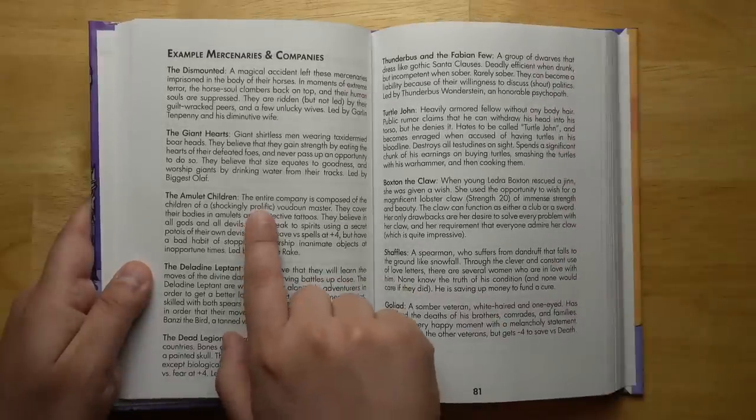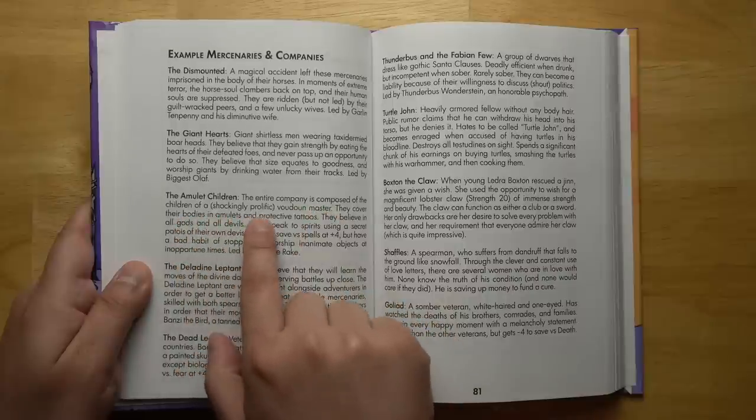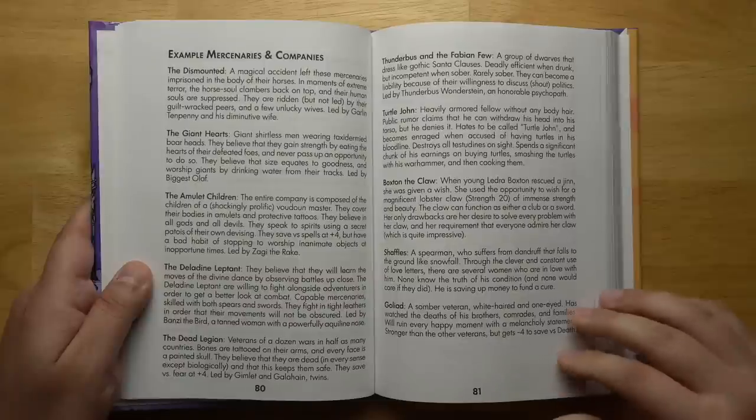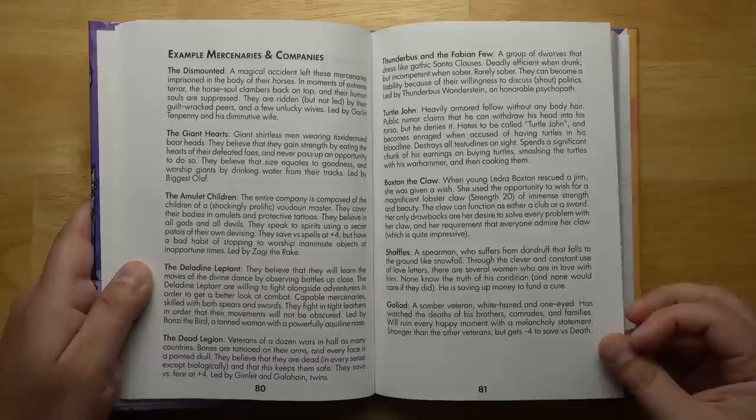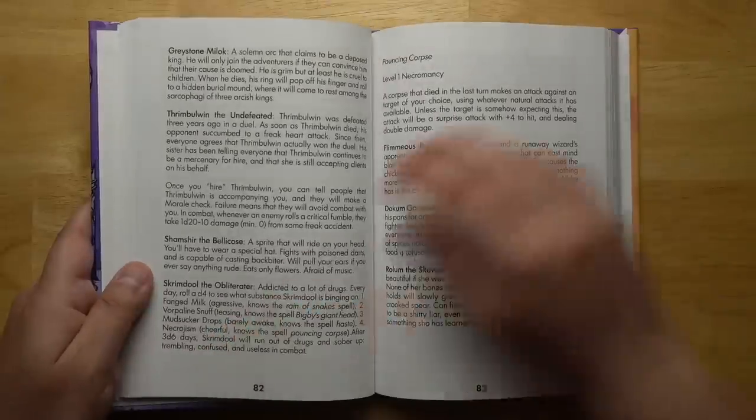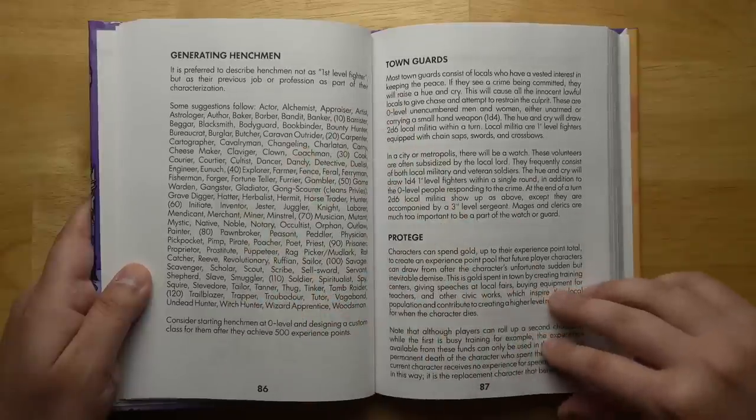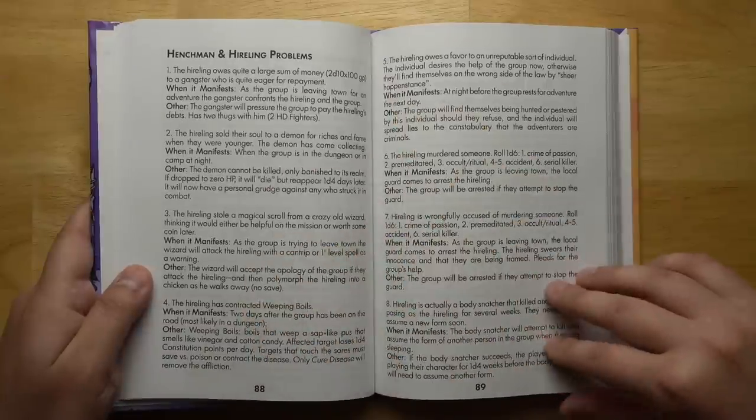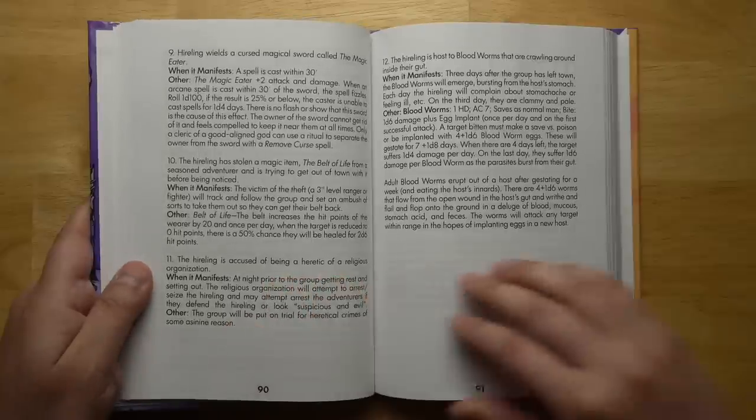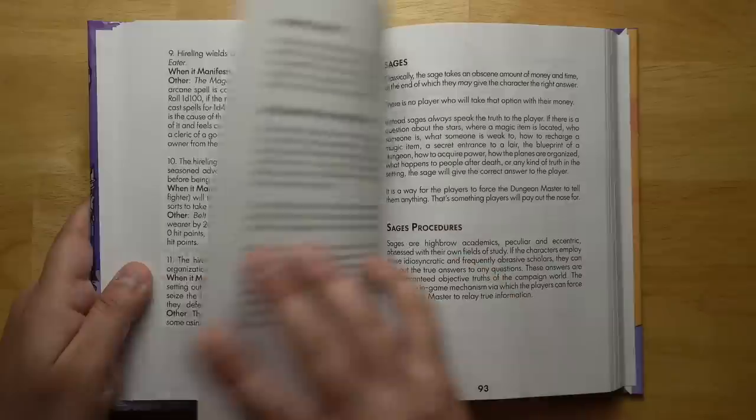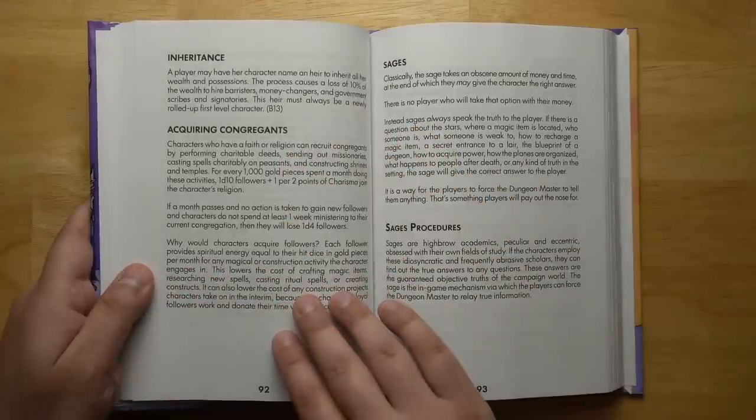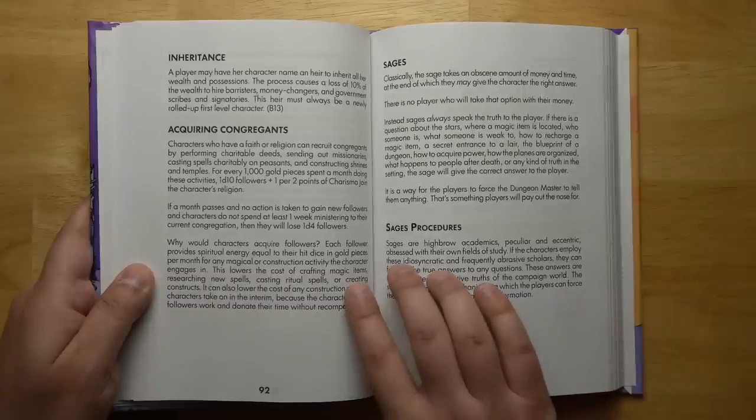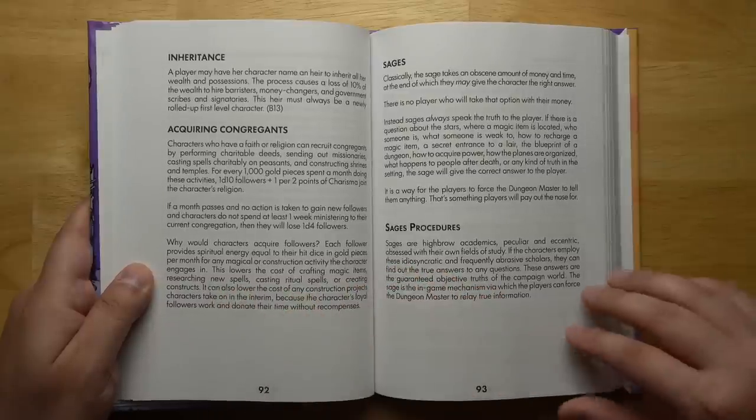For example, the amulet children. The entire company is composed of the children of a shockingly prolific Vaudone master. They cover their bodies in amulets and protective tattoos. They believe in all gods and all devils. They speak to spirits using a secret patois of their own devising. If you want to generate henchmen, there's lots of different examples of professions they may have had in the past. Rules for running town guards, how to get your own henchmen and hirelings, along with problems that will manifest.